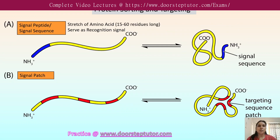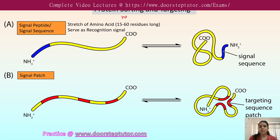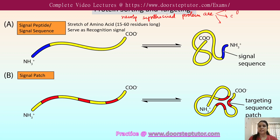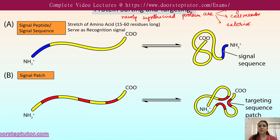Protein sorting and targeting is a cellular process by which newly synthesized proteins are directed to a desired subcellular location. This could be any organelle, any cell membrane, or even exterior to the cell. This is how protein sorting and targeting works.